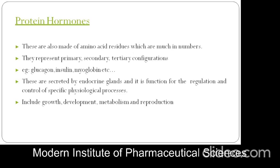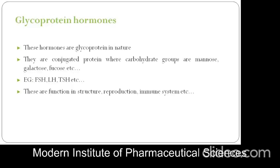Protein hormones are also made of amino acids in long chains, much greater in number than peptide hormones. They represent primary, secondary, and tertiary configurations. Examples include glucagon, insulin, and myoglobin. These are secreted by endocrine glands and function for the regulation and control of specific physiological processes, including growth, development, metabolism, and reproduction.